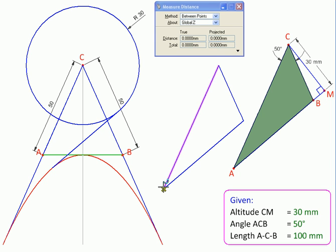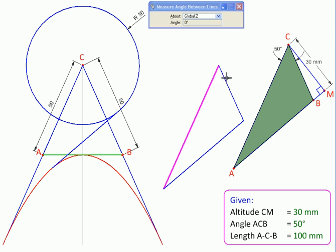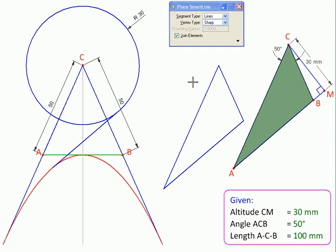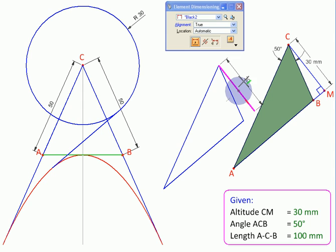Let's verify our solution by measuring this distance from A to C to B, and the total is 100 as required. The angle between these two sides is 50 as required, and finally the altitude from C dropped on AB is 30 mm as required.